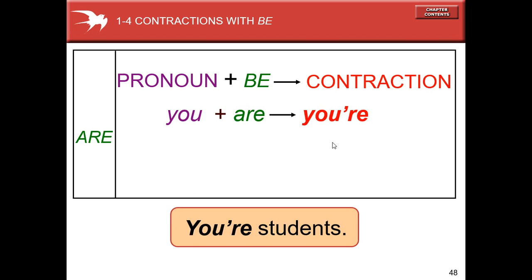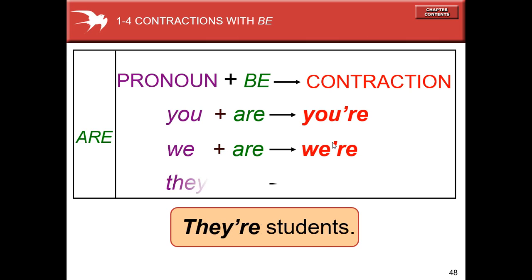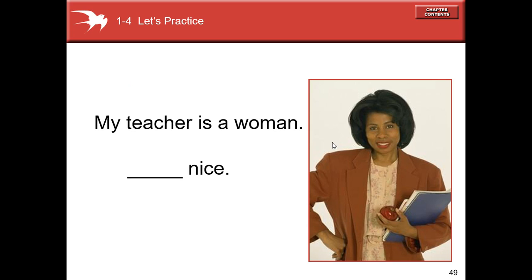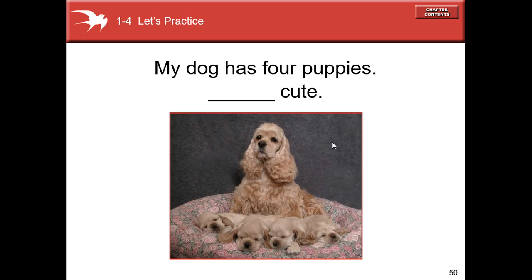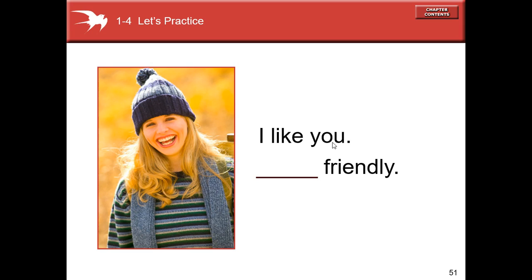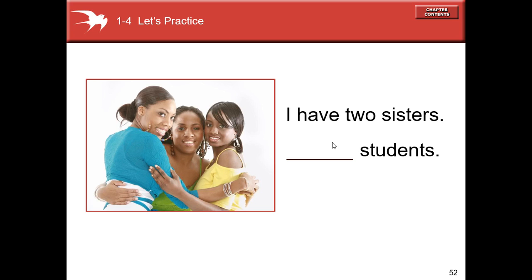The verb to be in the plural 'are': your students. Now it's your turn, let's practice. My teacher is a woman — she's nice. My dog has four puppies — they are cute. I like you — you're friendly. I have two sisters — we are students.